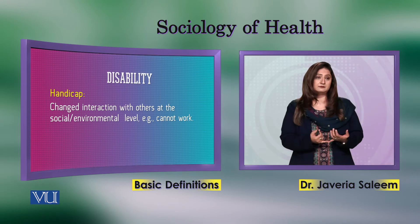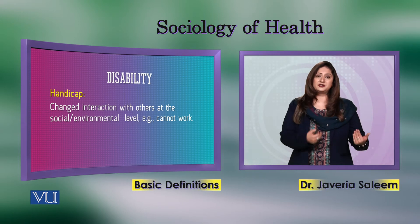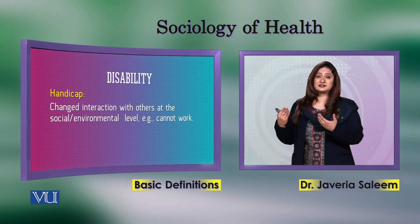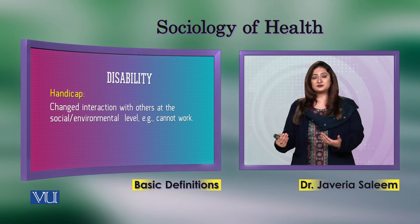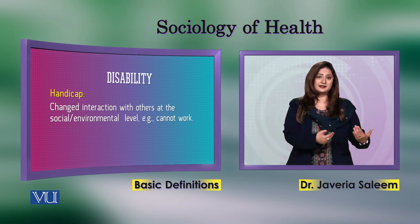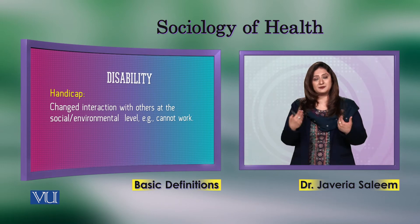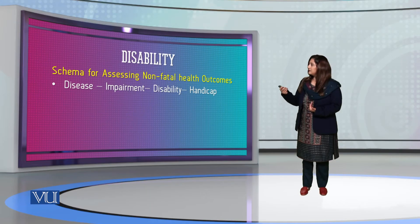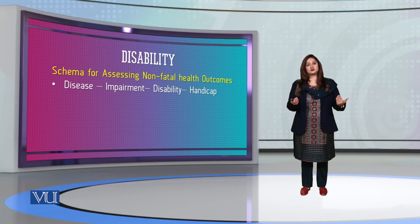Because the person cannot move, they become disorderly in their social circle, unable to go out without help. They become dependent on others — that dependence is the handicap. So the sequence is: disease leads to impairment, impairment leads to disability, and disability leads to handicap.